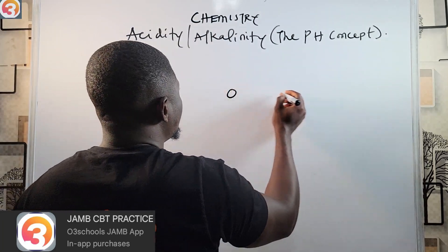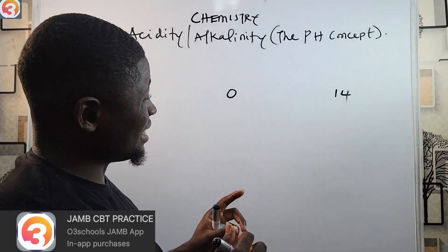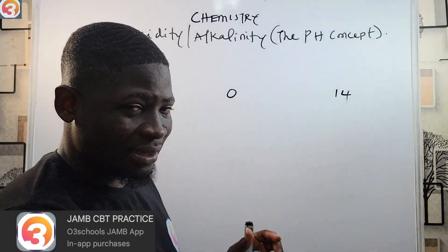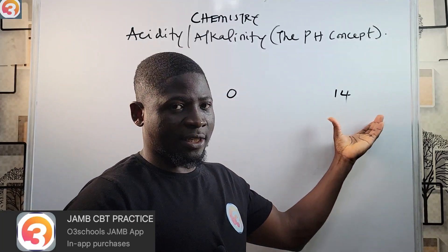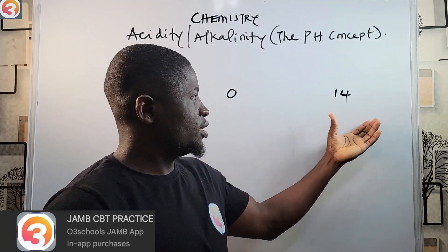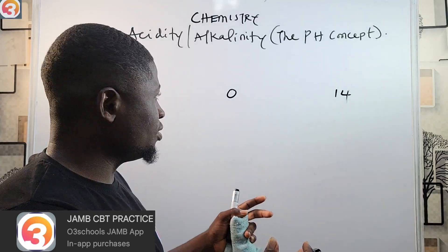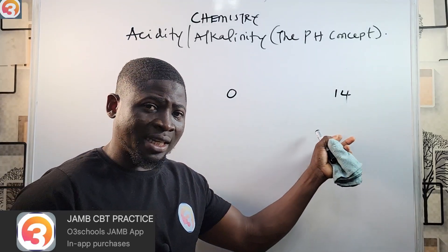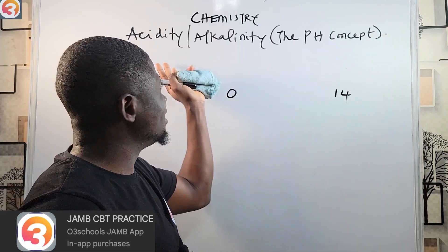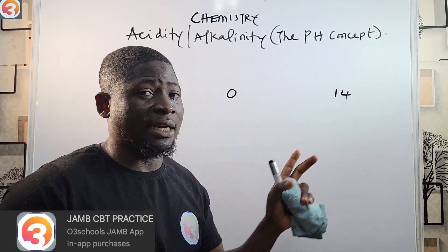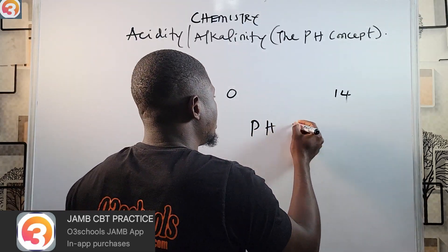The acidity or alkalinity of a substance is expressed by using a number ranging from 0 to 14. This scale of numbers ranging from 0 to 14 that expresses the acidity or alkalinity of a substance is also called the pH scale.